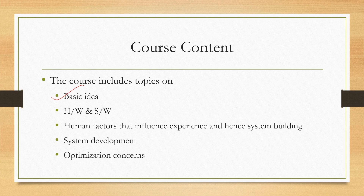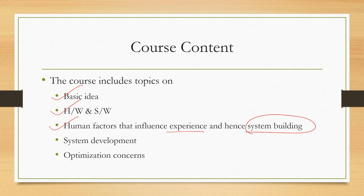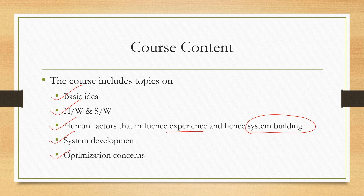What are we going to learn in this course? We are going to talk about the basic idea — what this technology area is — and then we are going to talk about the hardware and software used to develop such systems. One important thing we are going to discuss is the human factors that influence the extended reality experience and how it affects the overall idea of building such systems. We are also going to talk about system development in a structured way — how to build such systems, particularly the software systems. Last but not the least, we are going to touch upon optimization concerns, covering two types: experience optimization and resource optimization.